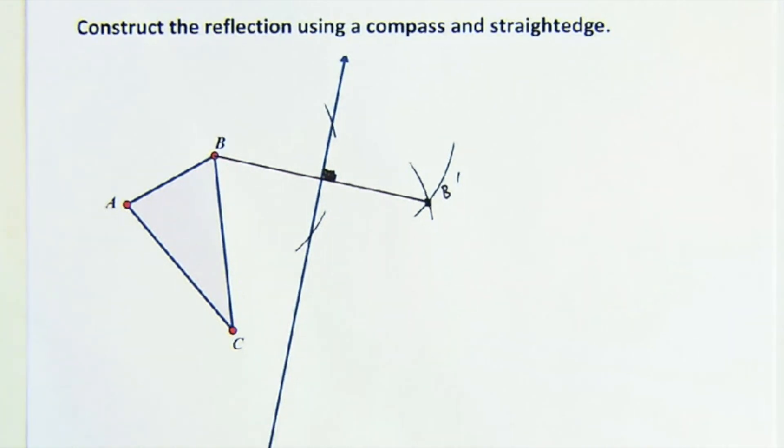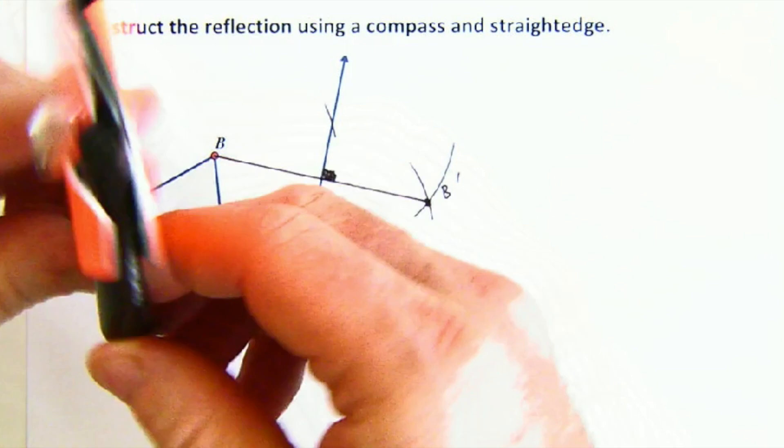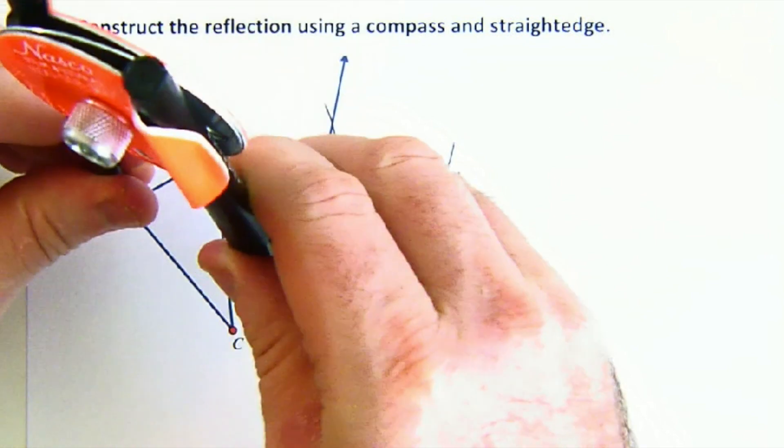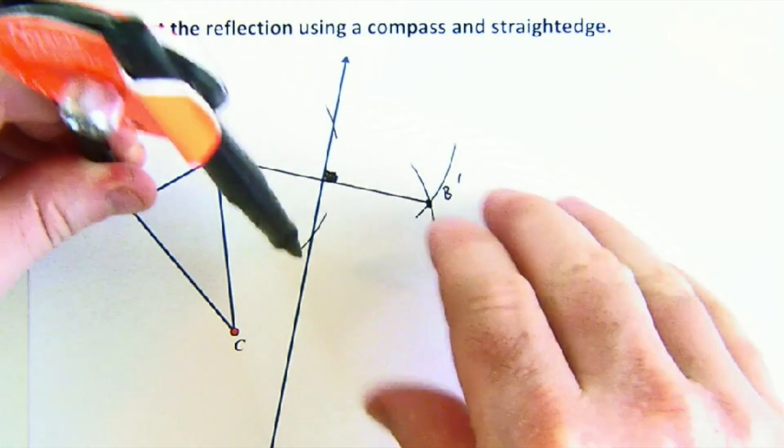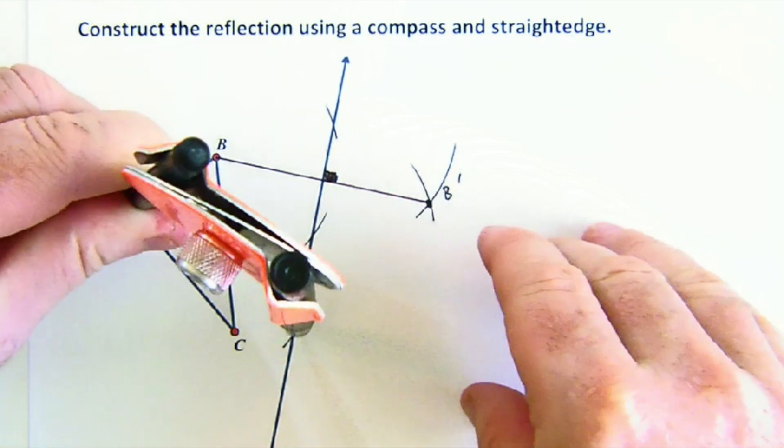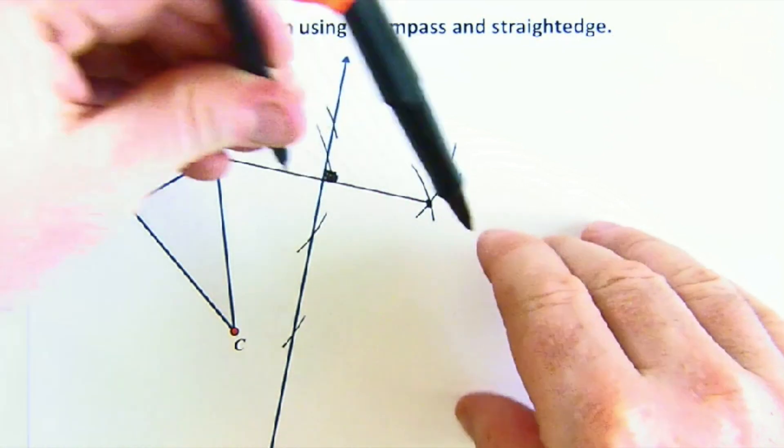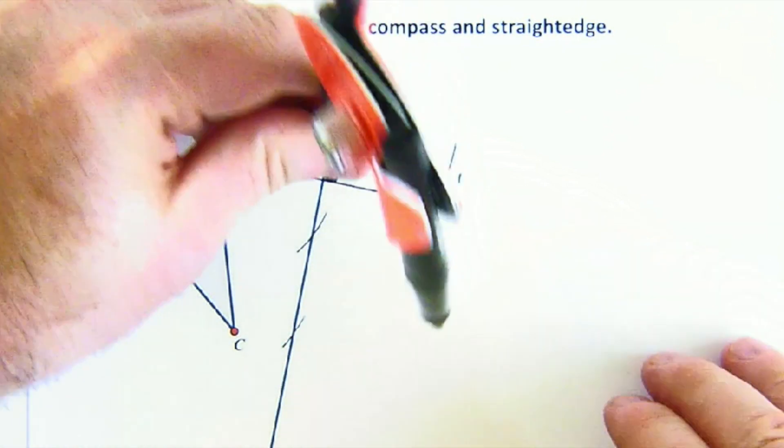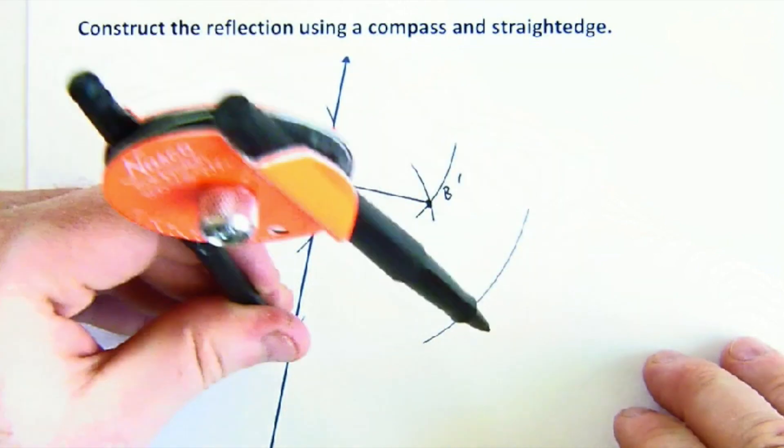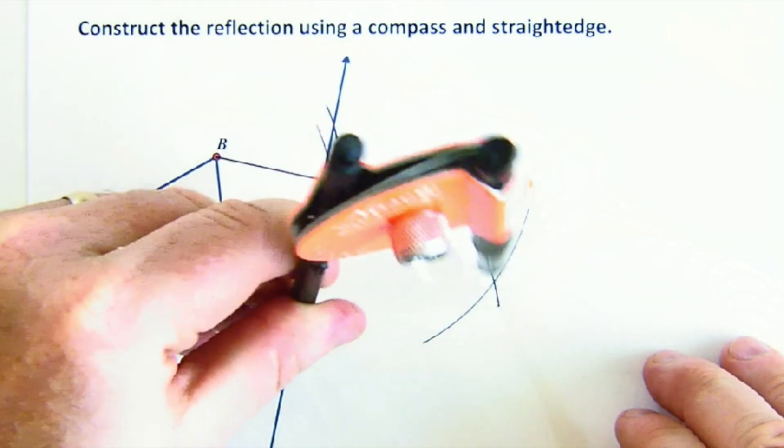You just have to do that two more times. You do not have to keep the compass the same each time. A is a little bit further away, so I'm going to stretch my compass and make two marks. And then from those two locations, again, create the X location.